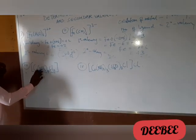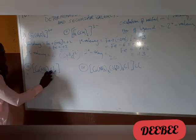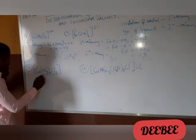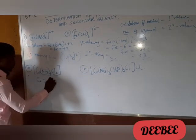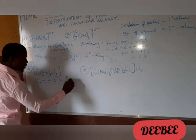So from here now, amine is neutral. So 0 times 4 is 0. Chlorine is minus 1. Minus 1 times 2 is minus 2. So on the other side, Co equals plus 2. That's the primary valence.